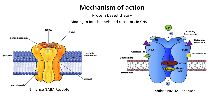Potassium channels, such as K2P, are also stabilized, reducing neuronal excitability. Additional targets include glycine receptors and voltage-gated ion channels, collectively producing the anesthetic effect.